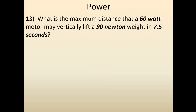Here's the next question — pause the video and work it yourself. Now we're looking for the maximum distance. Using the FD over T equation, we plug in 60 for the power and 90 newtons for the force, because we're lifting it up and have to counterbalance the weight of the object by exerting the same amount of force upward. We do it in 7.5 seconds. Solving, we get that the distance is 5 meters.